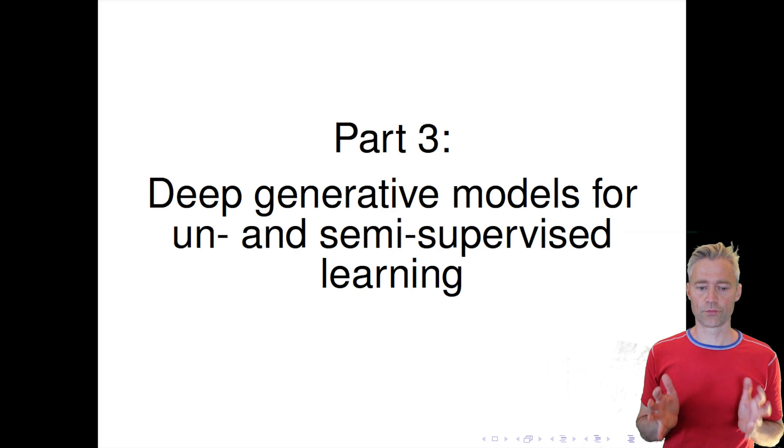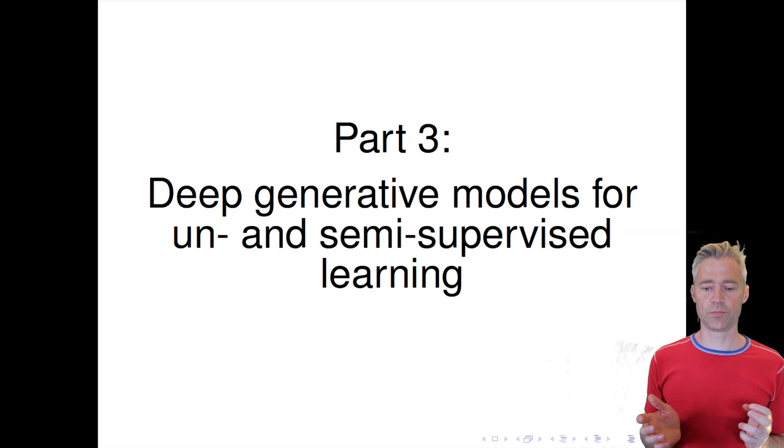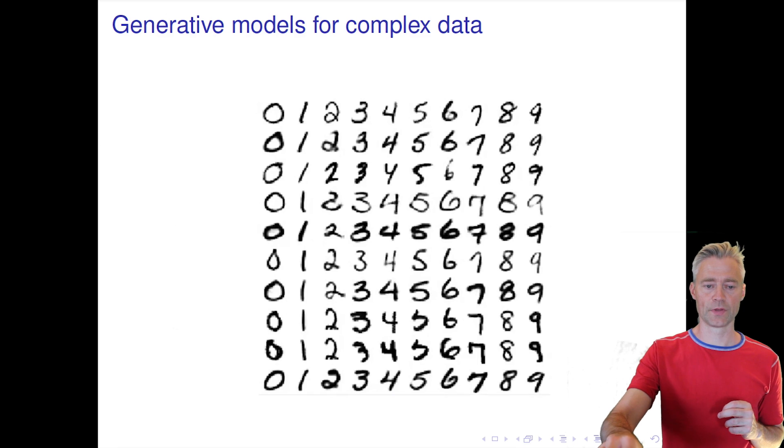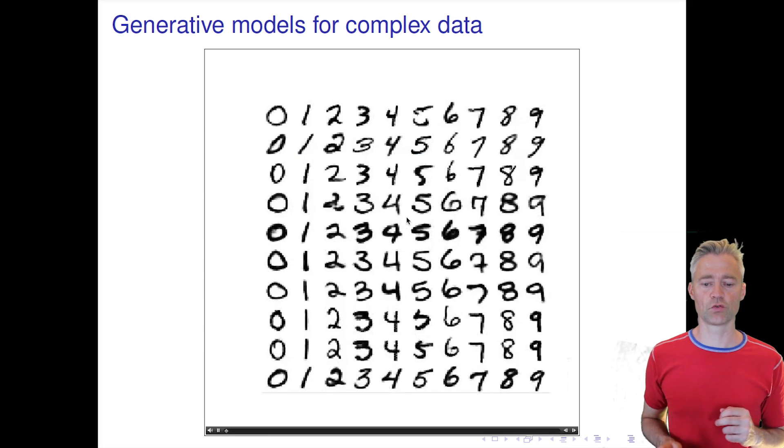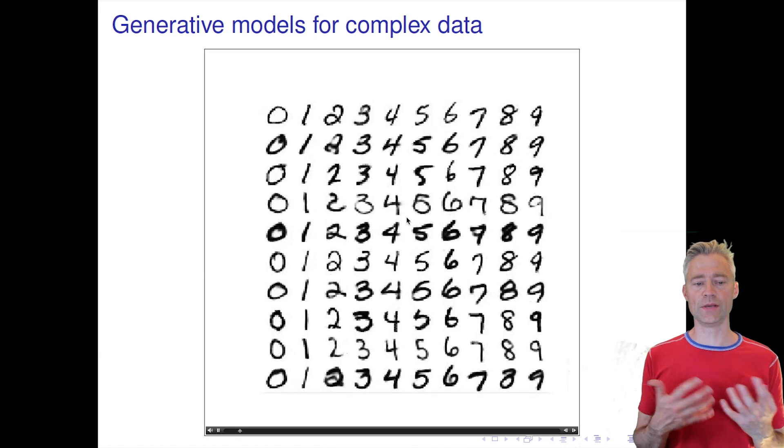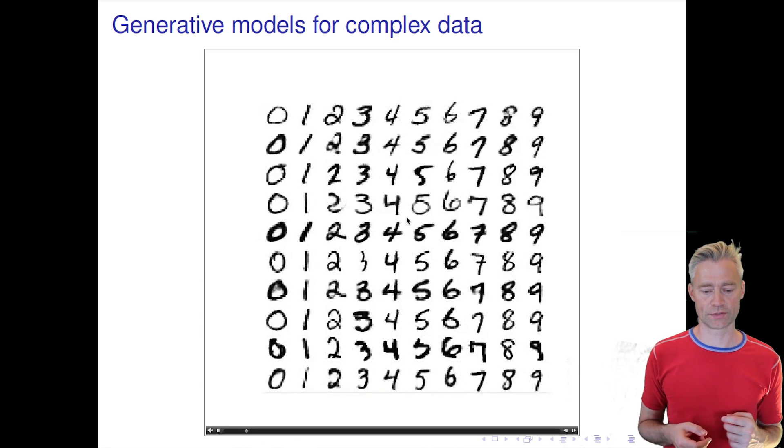So this is part three on deep generative models for unsupervised and semi-supervised learning. So think about this again - we want to build a model with latent variables where we can make it dream up new data points once it has been trained.